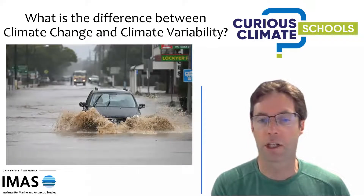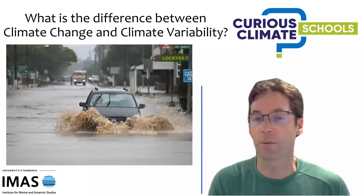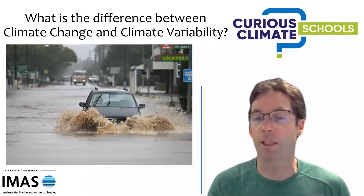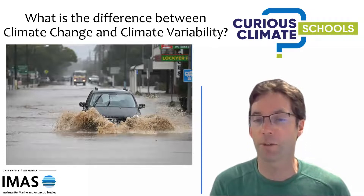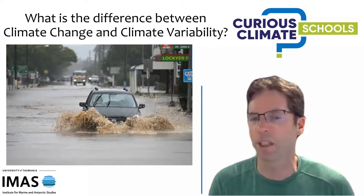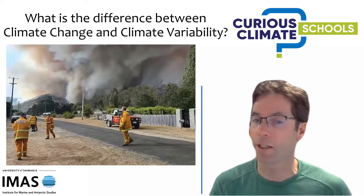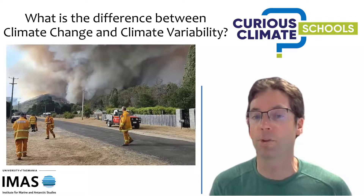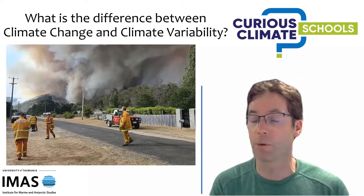In contrast, climate variability — and climate variability increases with climate change. Variability is around how rapidly our climate can change and how extreme our weather can become. Under climate scenarios, our climate will become more variable, which means at times we'll get increased flooding, like we did a few weeks ago in this picture here. But also we may end up with situations where we get hotter and get more bushfires, as shown here. So climate variability is around short-term change, and that's likely to become more extreme.